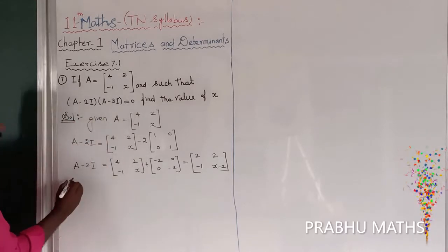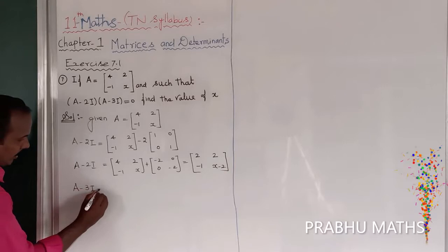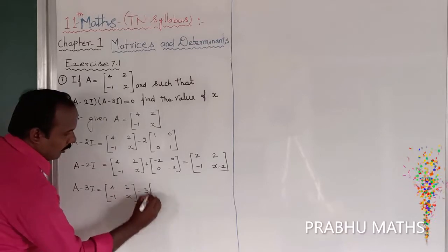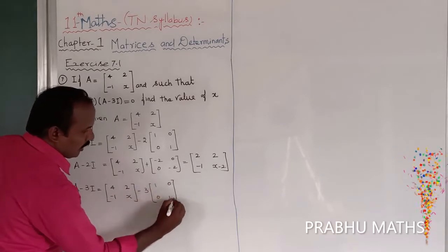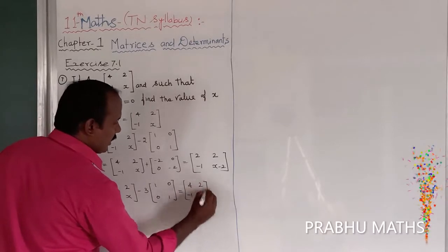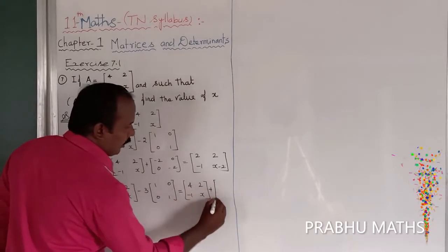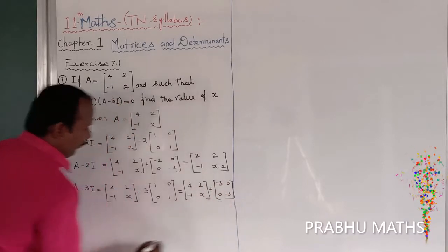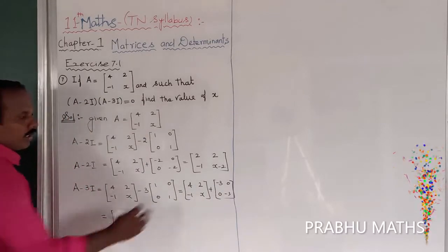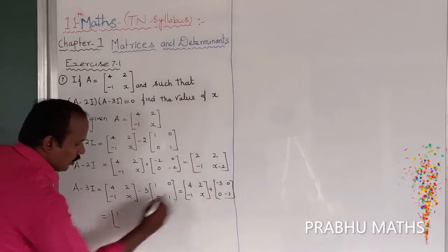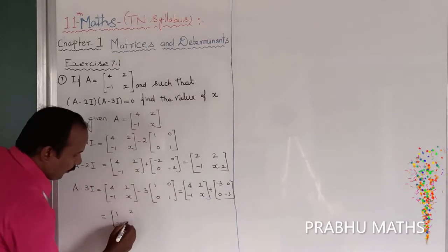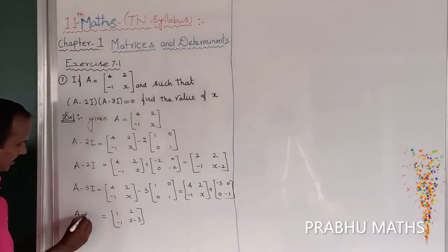Next, let us find out A minus 3I. So A minus 3I equals [4, 2; -1, x] minus 3 into the identity, which gives [4, 2; -1, x] minus [3, 0; 0, 3]. So: 4 minus 3 equals 1; 2 plus 0 equals 2; minus 1 plus 0 equals minus 1; and x minus 3. That is the value of A minus 3I, which is [1, 2; -1, x-3].